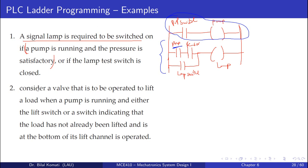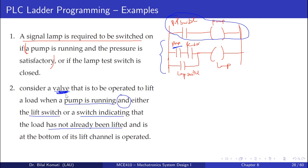The next example: consider a valve that is to be operated to lift a load when a pump is running AND either the lift switch or a switch indicating that the load has not already been lifted and is at the bottom of its lift channel is operated. We need to activate the valve with these conditions — an AND condition with an OR nested inside.